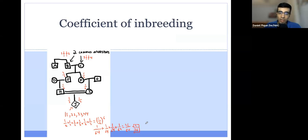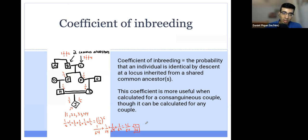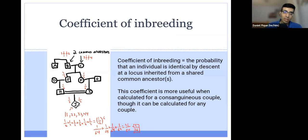There is another way to calculate the coefficient of inbreeding using the loop method. The coefficient of inbreeding is the probability that an offspring of a consanguineous union is identical by descent, based on their shared common ancestors.